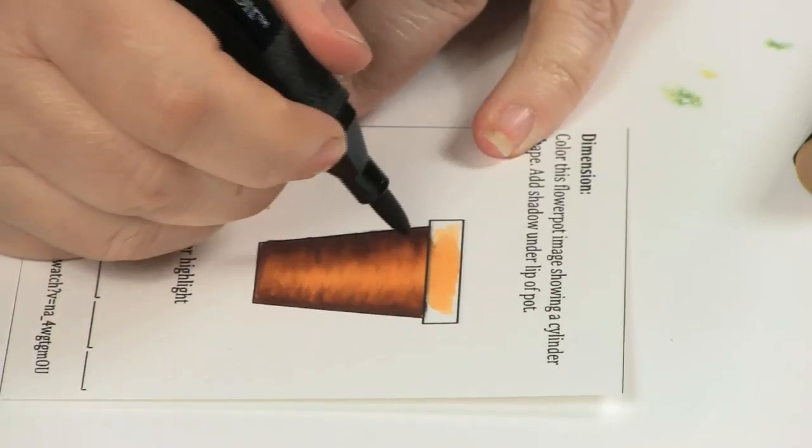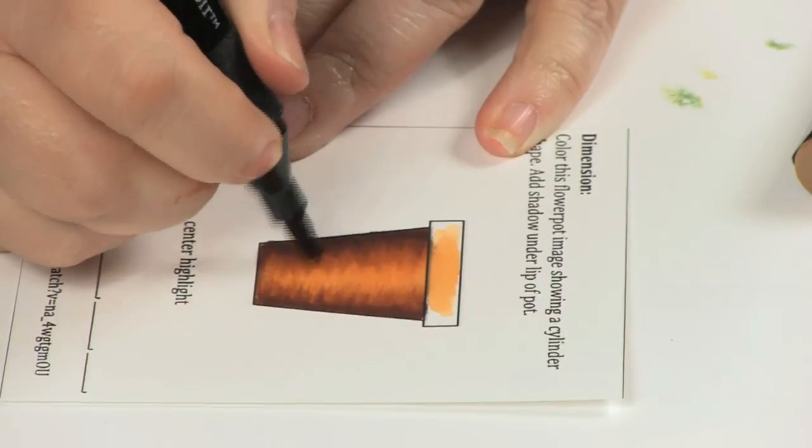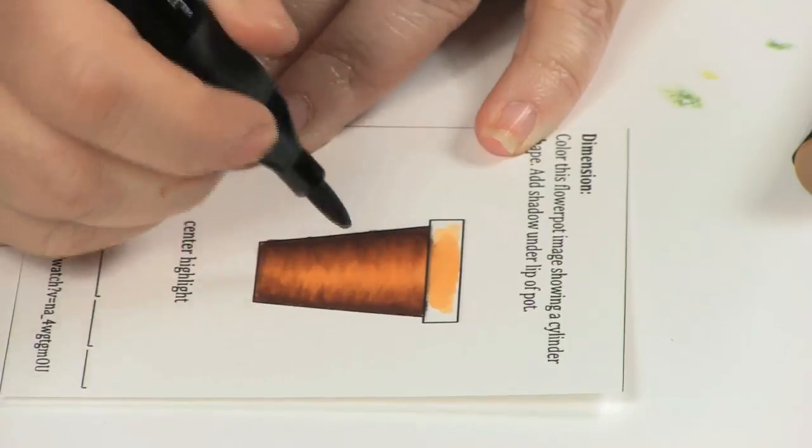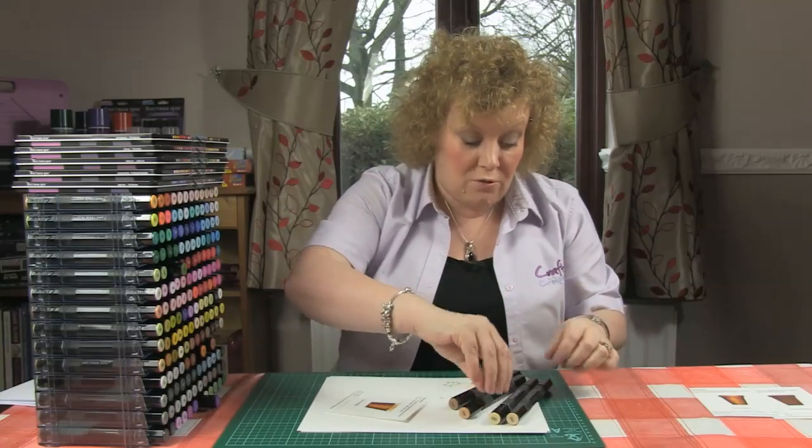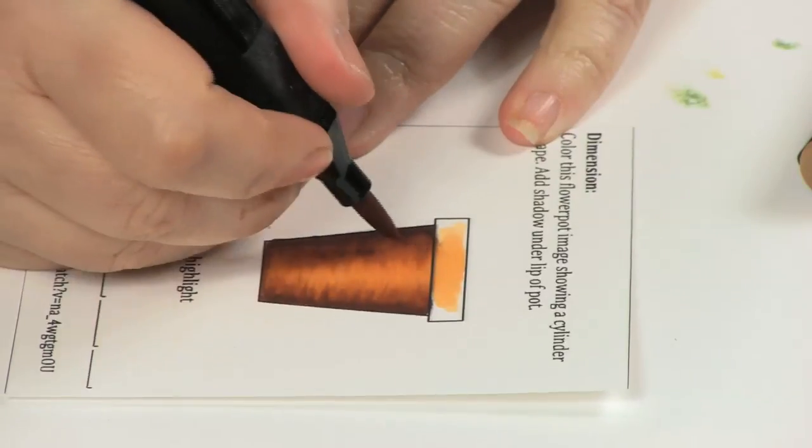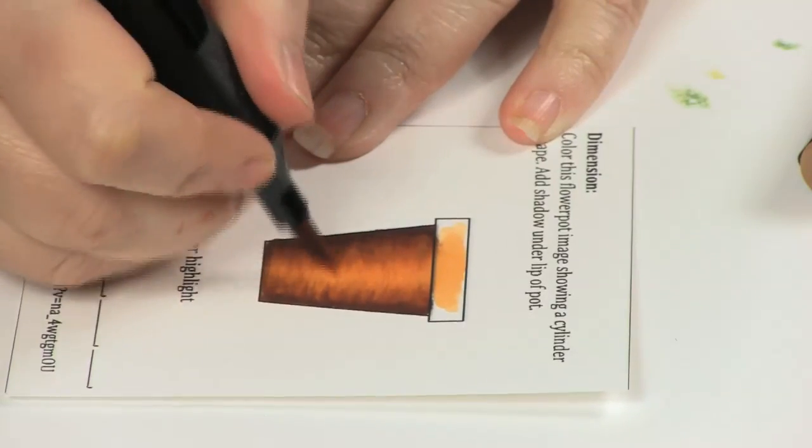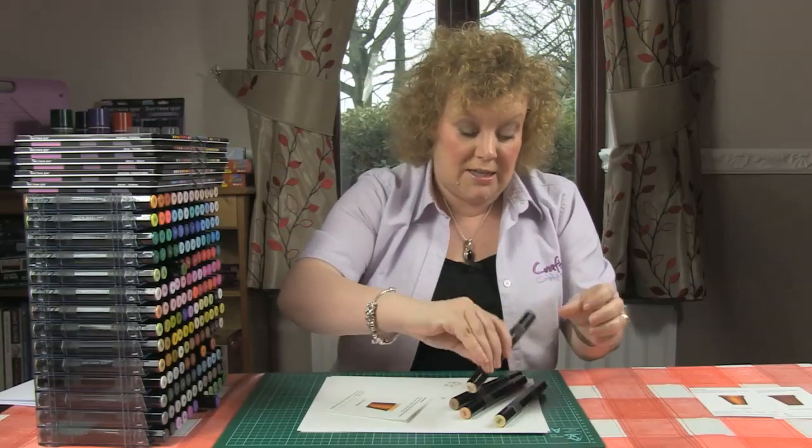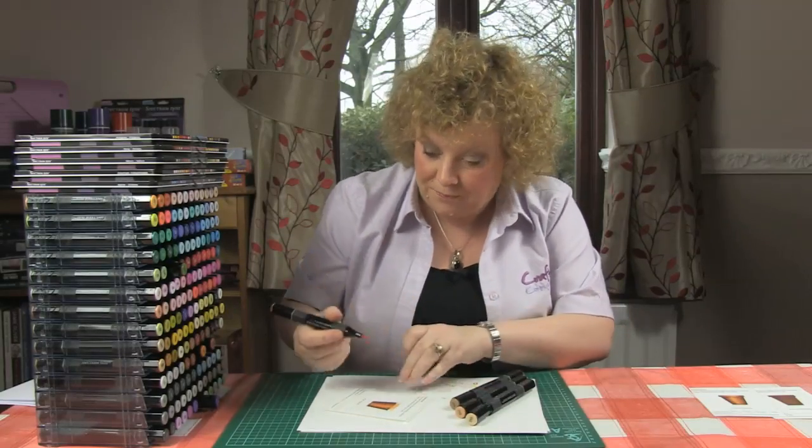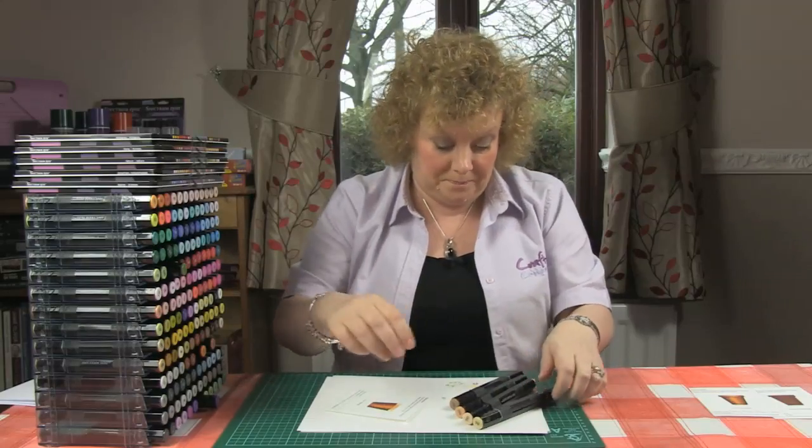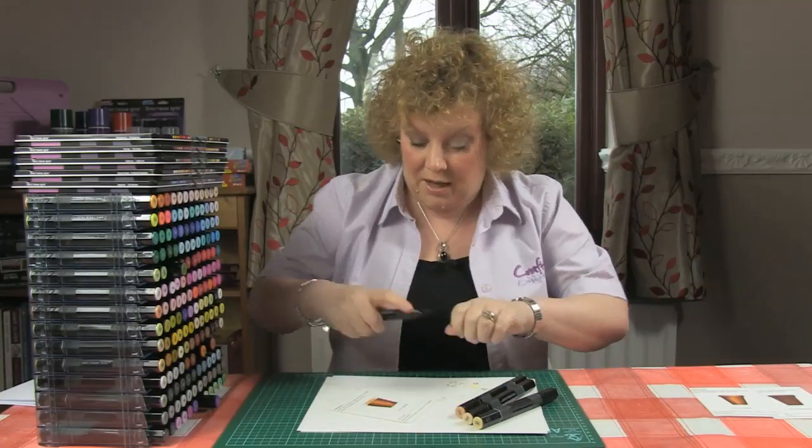Now you'll notice I'm leaving the lids off my pens as I go between the colours for speed of the YouTube clip, so you don't see me popping the lids back on and on. But what I would recommend is that you don't leave your lids off your pens for long periods of time because depending on the environment you're in they could dry out. So this is a case of do as I say not as I do. And you've got your TN2 and turn around and exactly the same again.